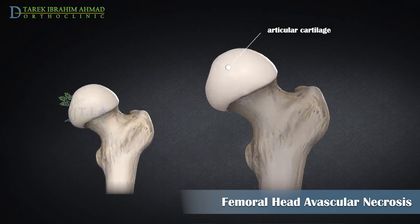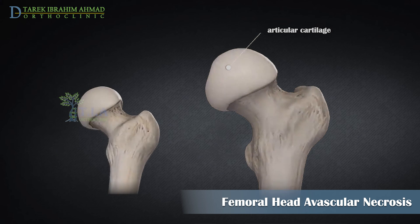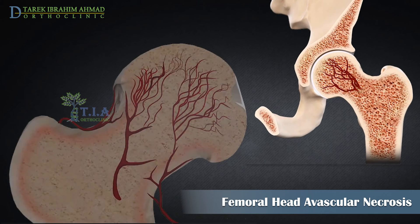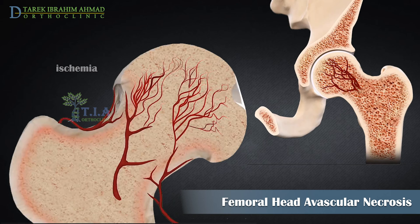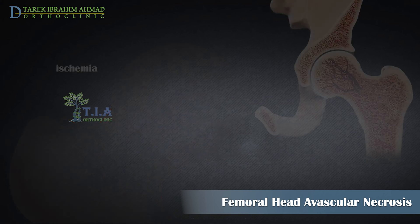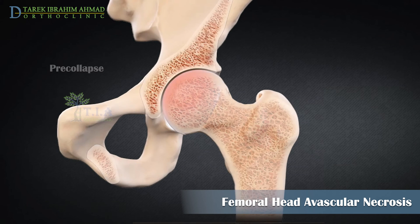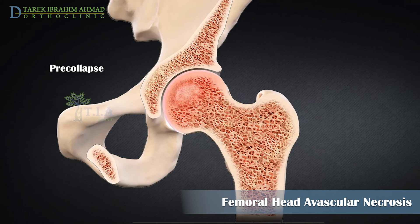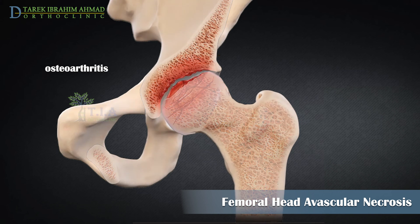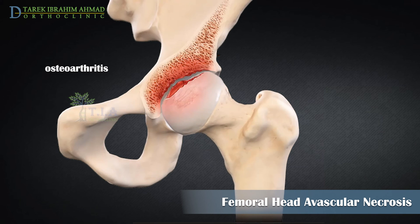Osteonecrosis of the hip occurs in the femoral head. It is a painful condition that occurs when the blood supply to the head of the femur is disrupted. This typically leads to death of the bone cells in a localized area of the femoral head, leading to collapse of the necrotic segment. As a result, the articular cartilage covering the hip bones also collapses, leading to disabling arthritis.